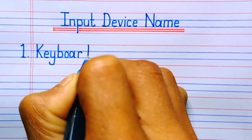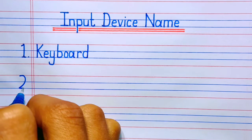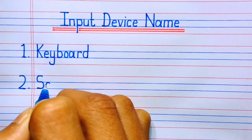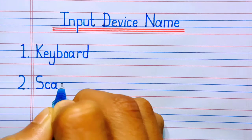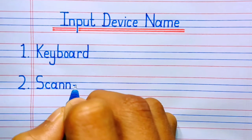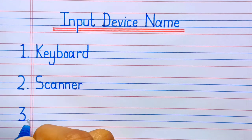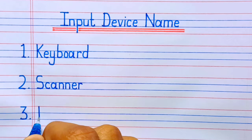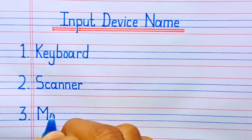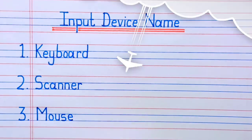Number one: keyboard. Number two: scanner. Number three: mouse.